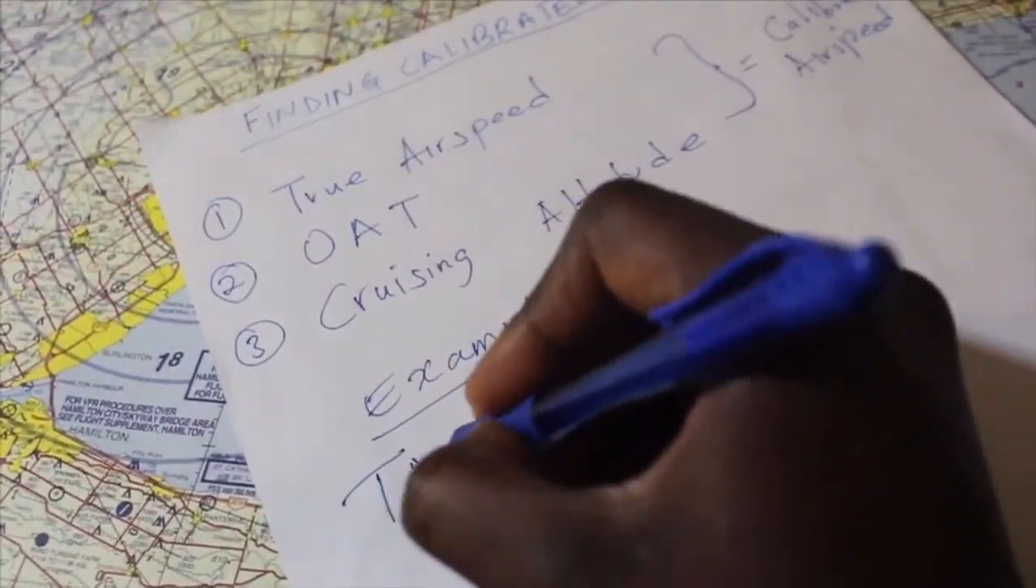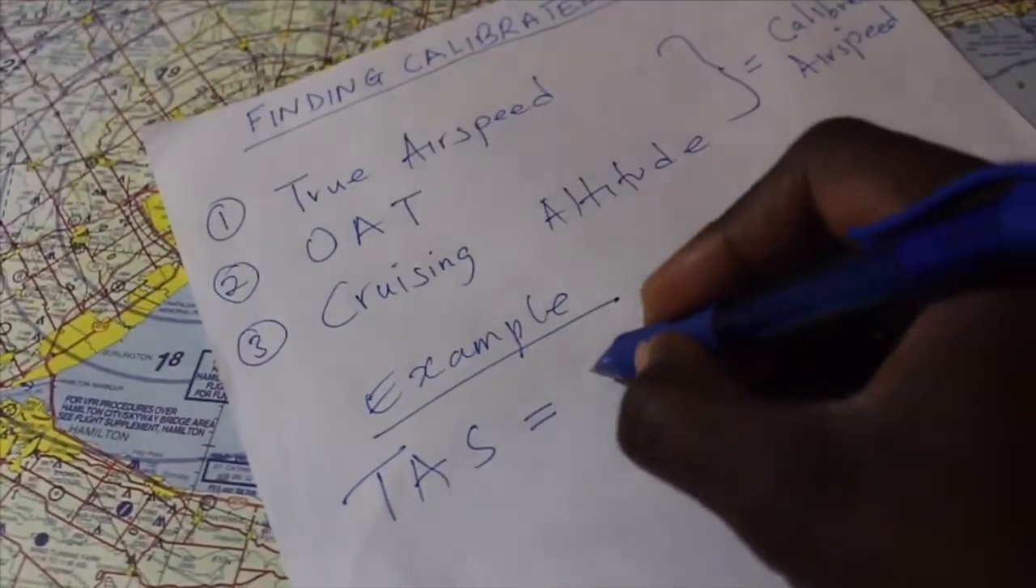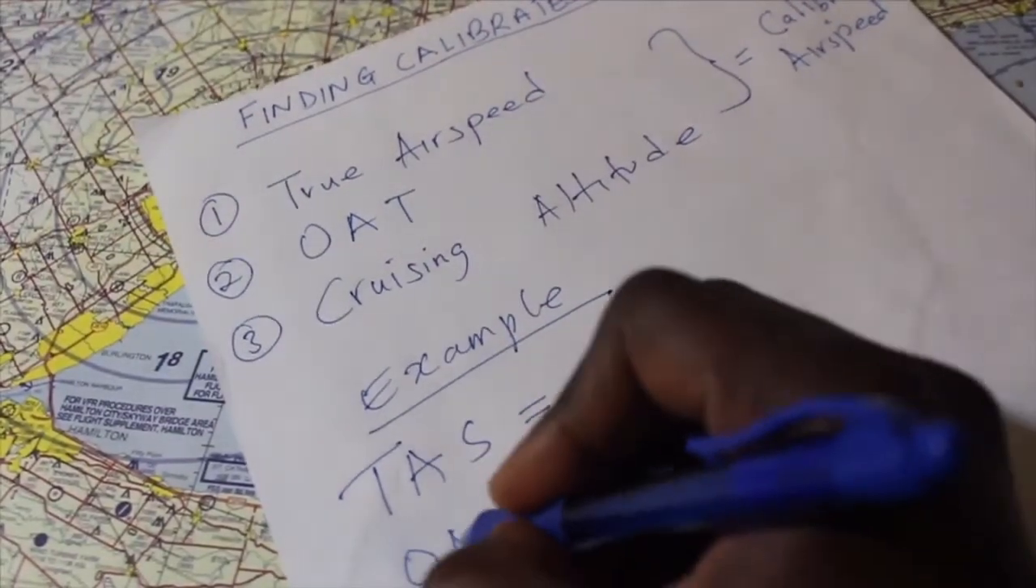Let's set an example here. If we have a true airspeed of 100 and an outside air temperature of 15, which is standard just to make the calculation easy, and cruising altitude of 5,000 feet, let's calculate for our calibrated airspeed using the E6B.